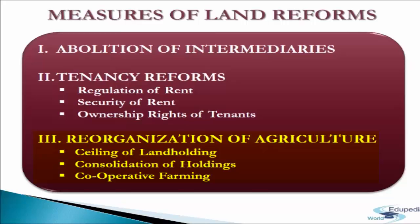The bulk of the land consolidated has been in the states of Punjab, Haryana, UP, Maharashtra, Bihar and Orissa. There were many reasons why the progress has been very slow, such as the quality of soil differing from land to land, farmers being generally attached to their land emotionally and sentimentally, reliable and up-to-date land records not being available in many areas, and many states lacking adequate and trained staff to carry out this program. These are some factors which resulted in the slow progress of consolidation of land holdings.